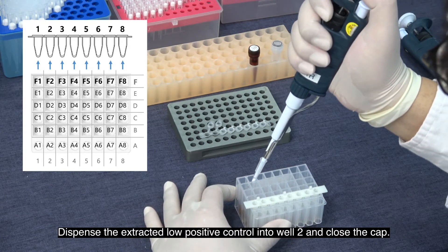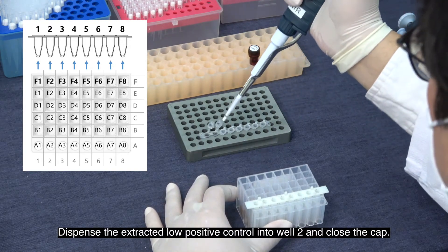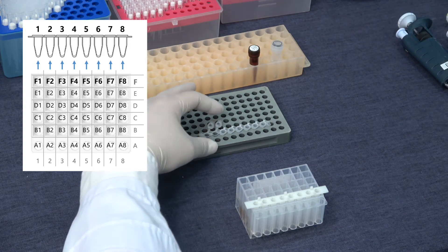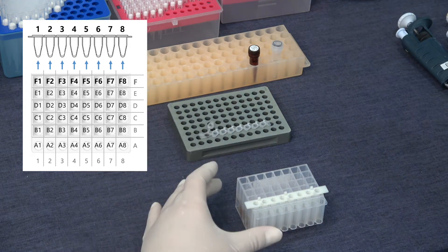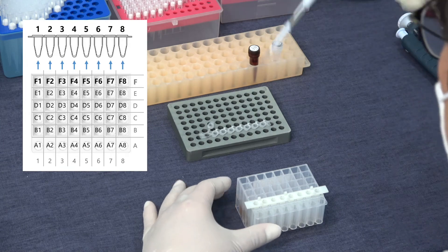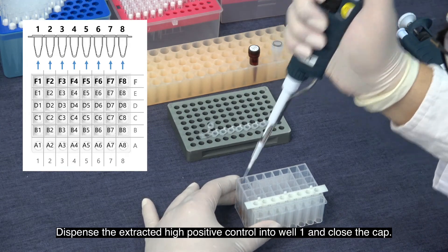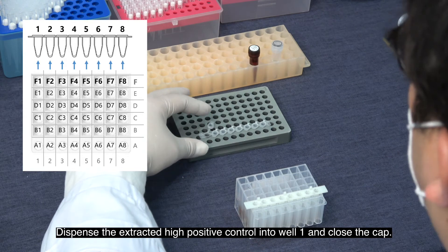Dispense the extracted low positive control into well 2 and close the cap. Dispense the extracted high positive control into well 1 and close the cap.